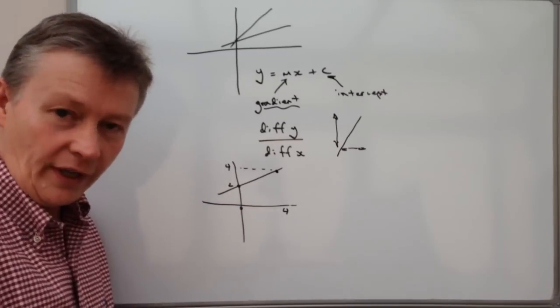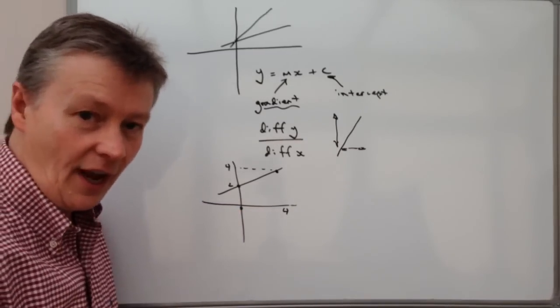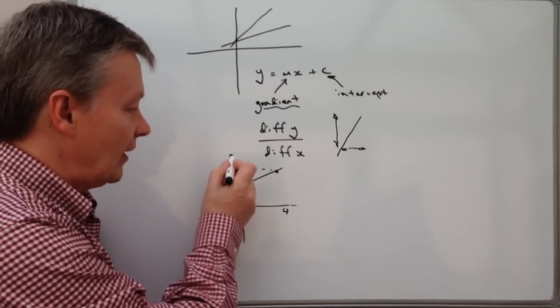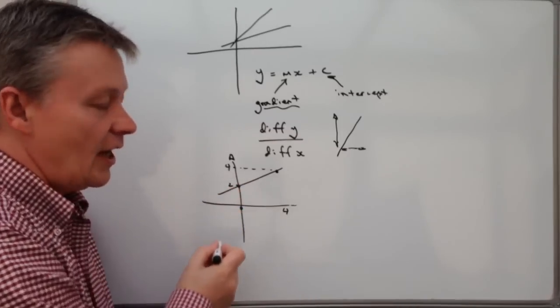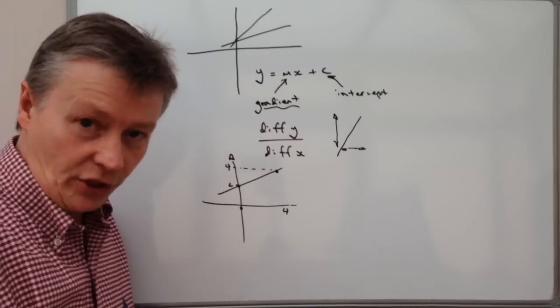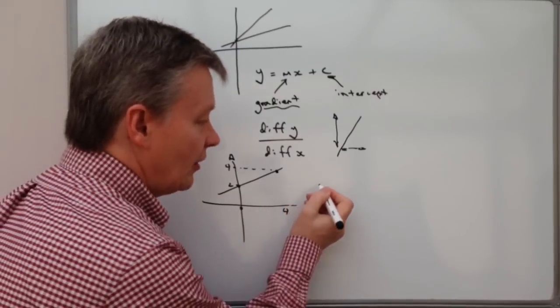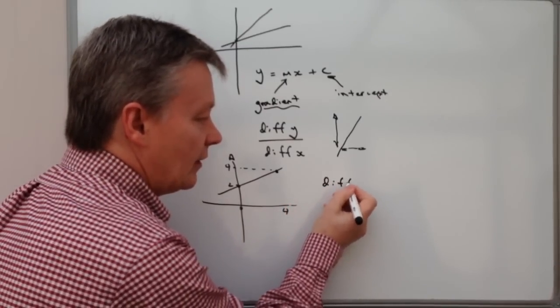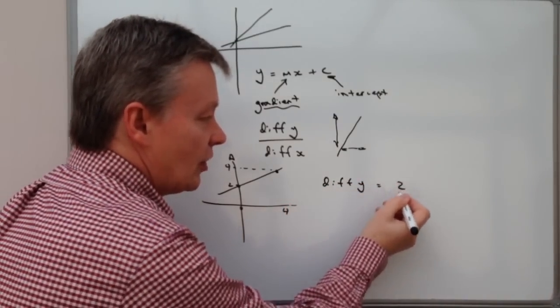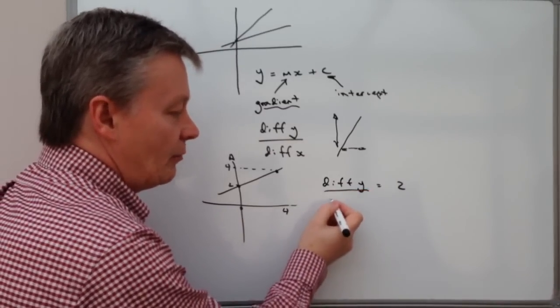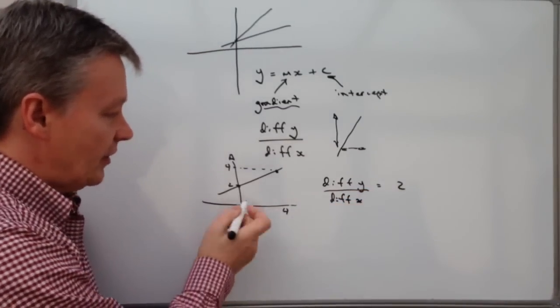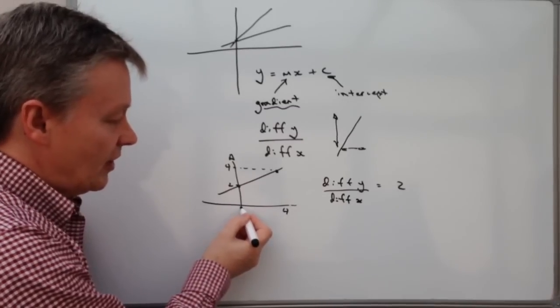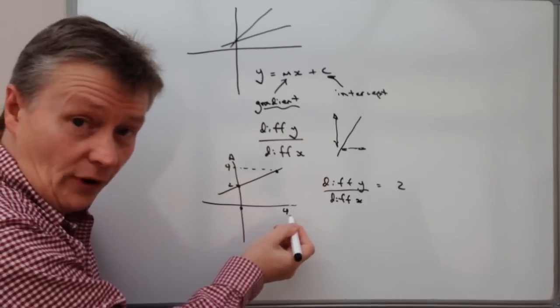So the difference in y divided by the difference in x, well, this is the y-axis, and you can see here that the difference between the two is four take away two, which is two. So in other words, the difference in y equals two, and we're going to divide that by the difference in x, and that's going to equal the distance here between zero and four.